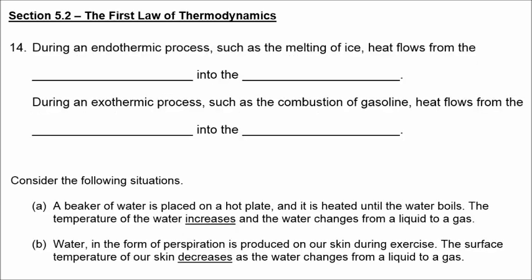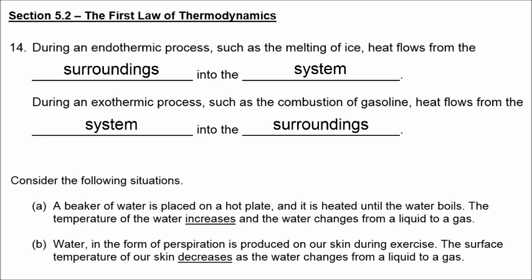During an endothermic process, such as the melting of ice, heat flows from the surroundings into the system. During an exothermic process, such as the combustion of gasoline, heat flows from the system into the surroundings. In one situation, the temperature of water increases when placed on a hot plate, but in another, the temperature of our skin decreases as water evaporates on it. In both cases we have evaporation of water, but a difference in temperature change — how do we reconcile this?